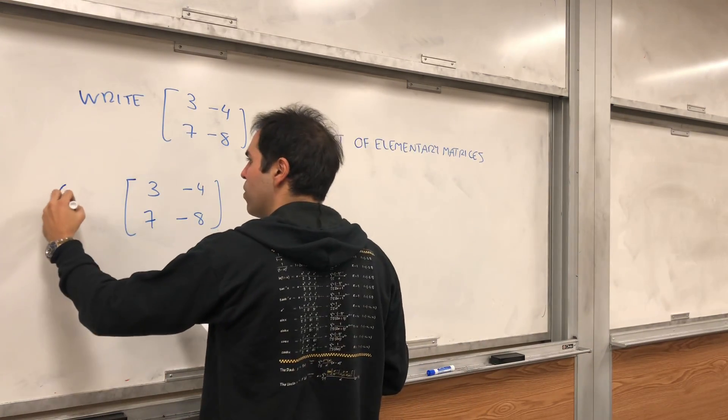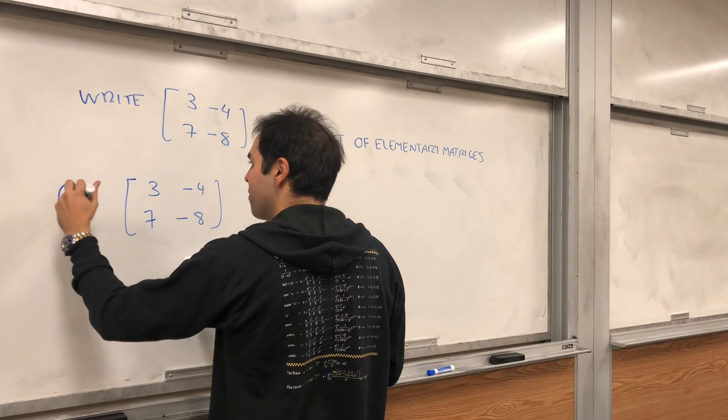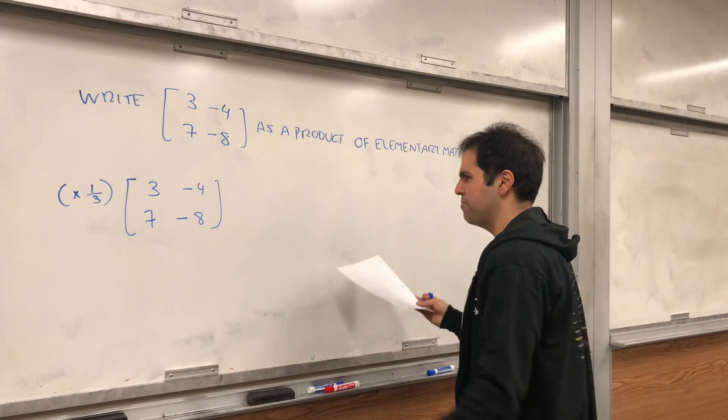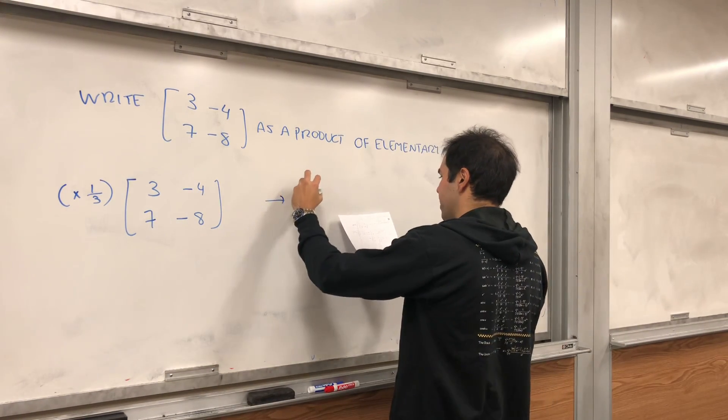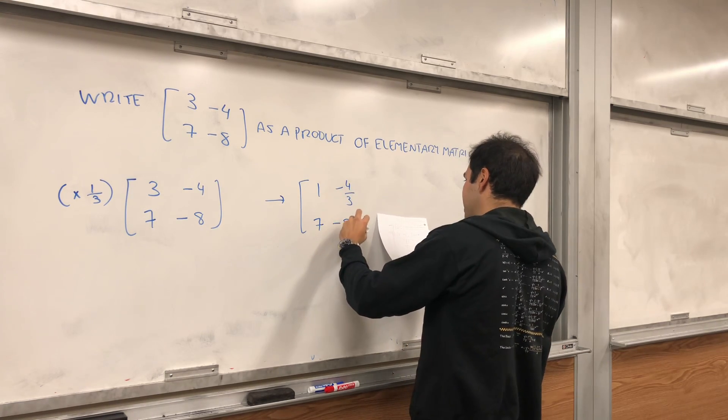First of all, this 3 we want to turn into 1. So let's divide, I guess let's multiply by 1 third. And I'll also explain what the elementary matrix is. So we get 1 minus 4 thirds, 7 minus 8.